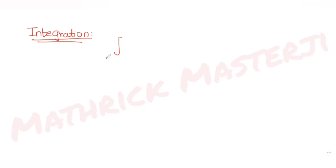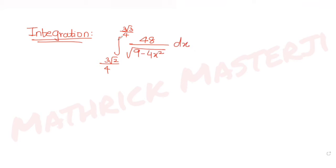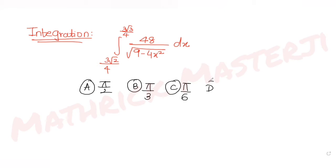The question tells us to find the value of an integral with limits 3√2/4 and 3√3/4. The expression given is 48 divided by the square root of (9 minus 4x²) dx. The answer choices are π/2, π/3, π/6, and 2π. We need to figure out which one is correct.